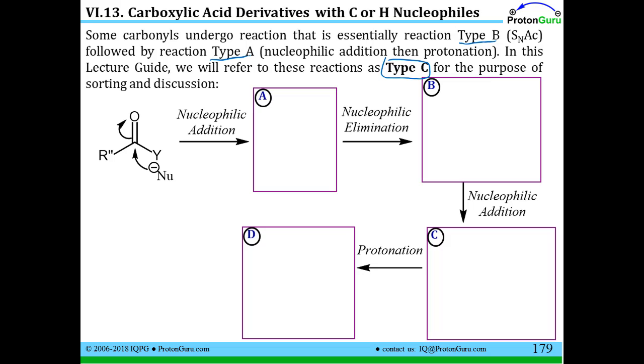If I have a really reactive nucleophile, I'll attack the carbonyl. I'll get my initial intermediary species where the nucleophile has added, and we have the Y group and the R double prime still. We then have nucleophilic elimination where we push off some type of leaving group. So we have some sort of leaving group coming off, and one equivalent nucleophile has added. That is the nucleophilic acyl substitution process.